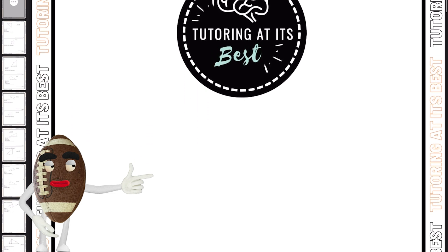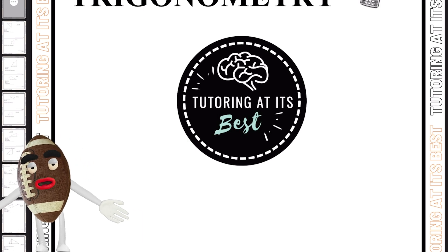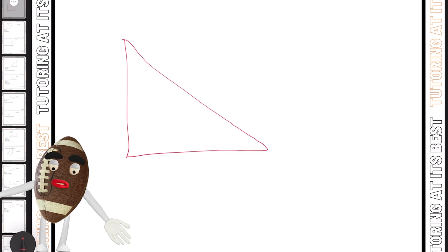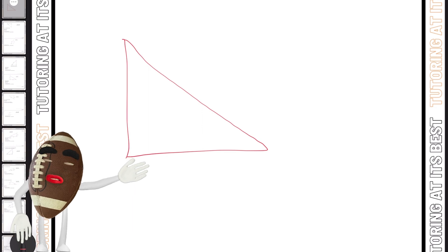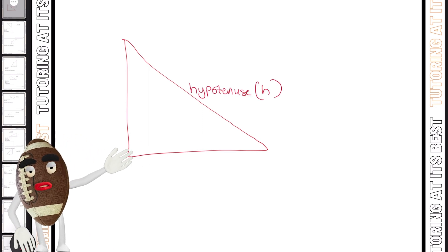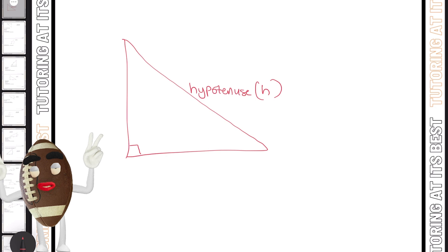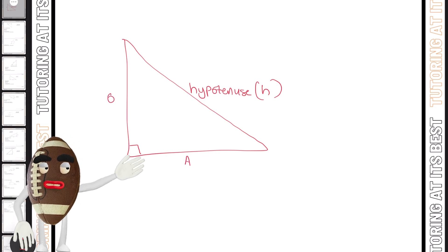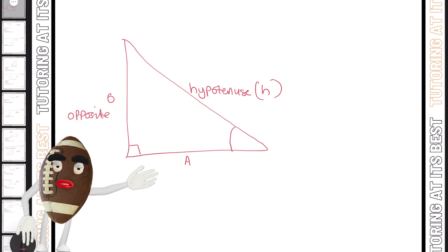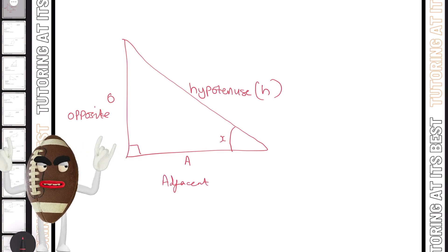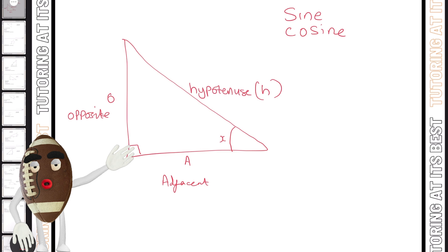So what is trigonometry? Well, as I mentioned, it involves calculating angles and sides in triangles. Now let's take a look at a triangle I have here. There are three sides of a right-angled triangle and they have special names. Starting off with H for the hypotenuse — that is the longest side and it is opposite the right angle. Then we have our opposite and our adjacent. Opposite is opposite the angle, and adjacent is next to the angle. These are the three trigonometric ratios: sine, cosine, and tangent.